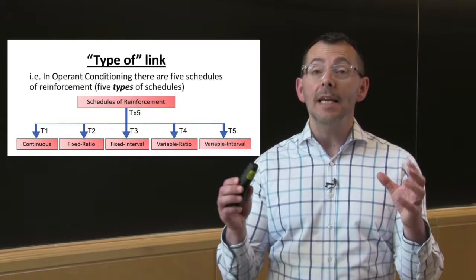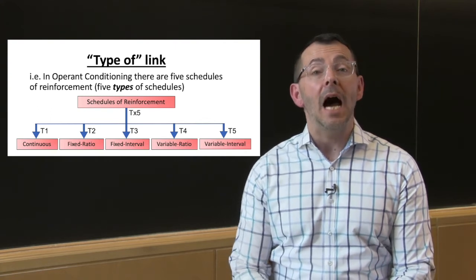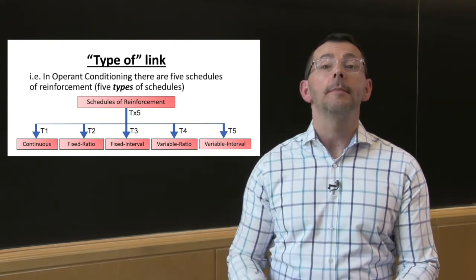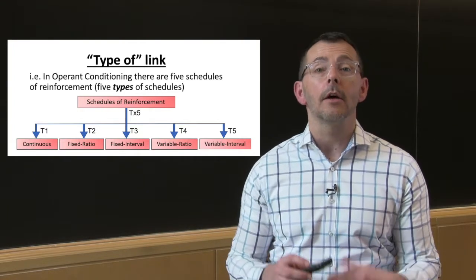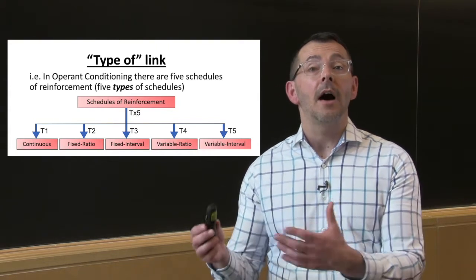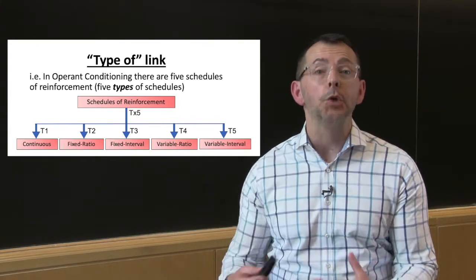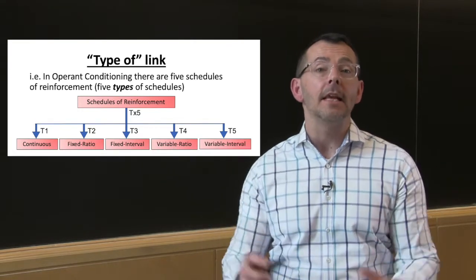We can use a type of link to indicate different instances that fall within a higher order category. The concept in the higher layer represents a class, and the concepts in the lower layer are different members of that category. In the example here, we can see that there are five different types of schedules of reinforcement.